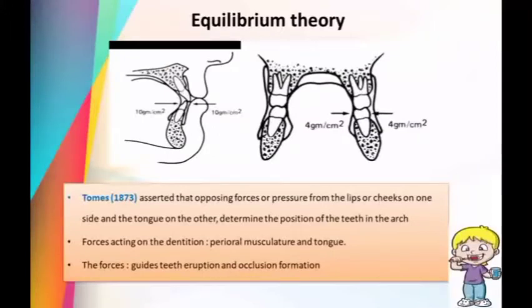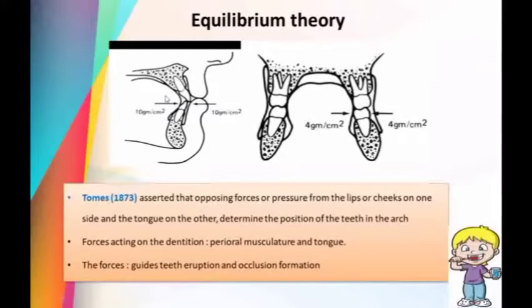The equilibrium theory was proposed by Tomes in 1873. According to him, the opposing forces or pressure from the lips and cheeks on one side, and the tongue on the other side, determine the position of the teeth. These forces act on the dentition principally by the perioral musculature and the tongue, and also guide the eruption of the teeth. The primary factors include intrinsic forces by tongue and lips, extrinsic forces including habits like thumb sucking or orthodontic appliances, forces from dental occlusion, and forces from the periodontal membrane.